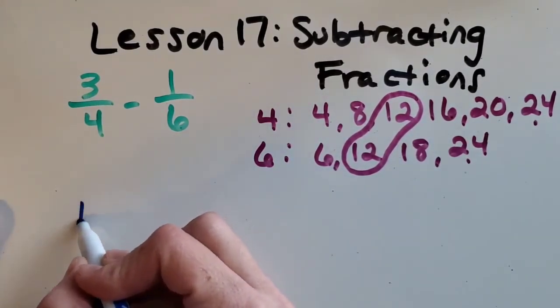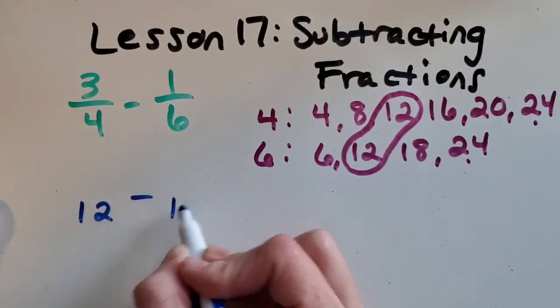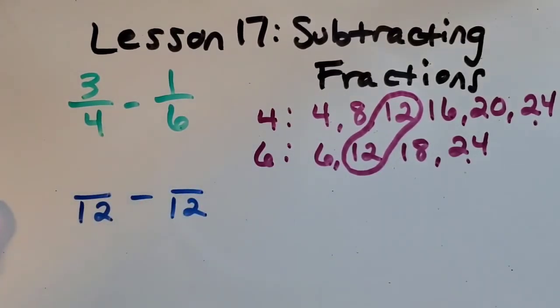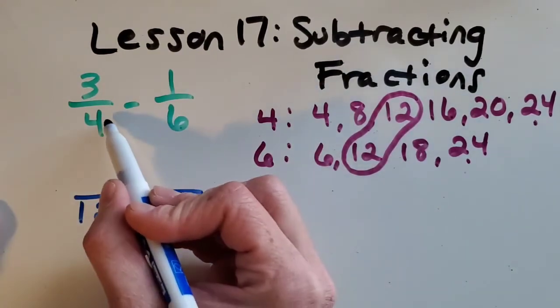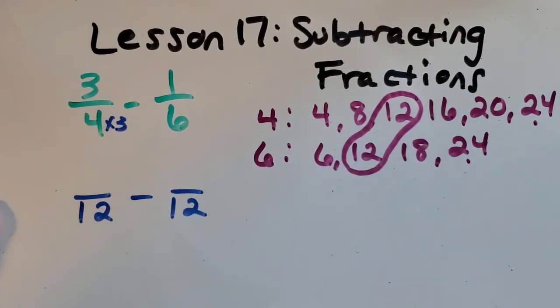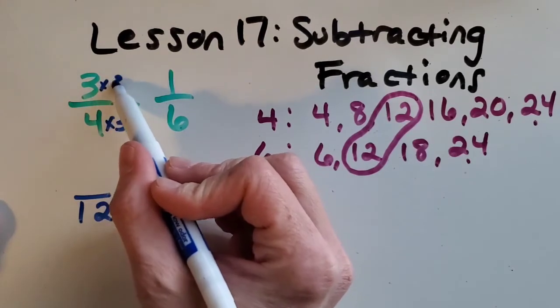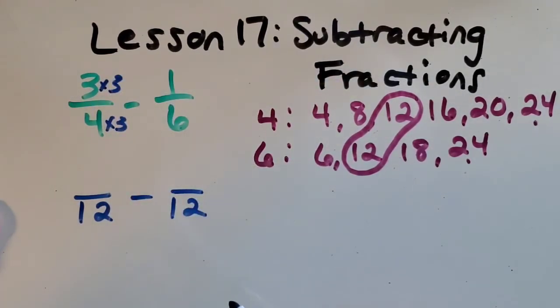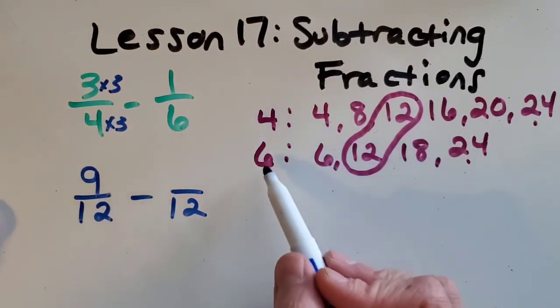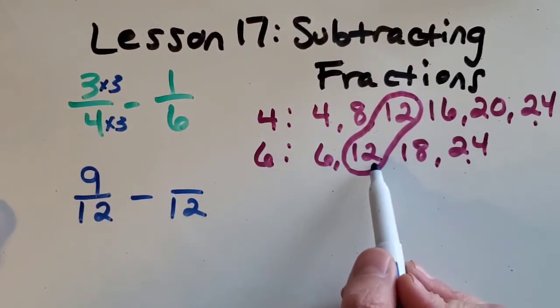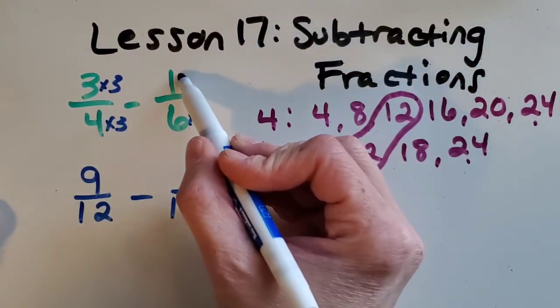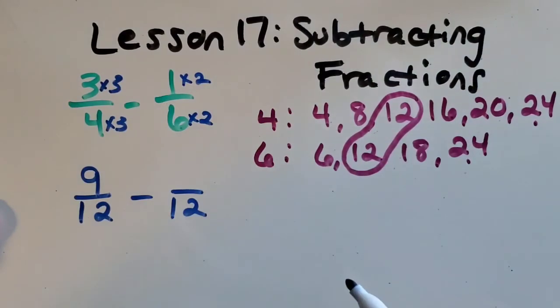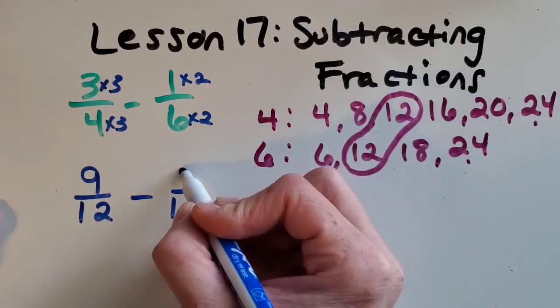Okay now let's build our new problem with our common denominator of 12. Okay so I said earlier 4 times 3. So that's what we're going to do with this fraction. 4 times 3 and 3 times 3. Okay good job, 9. All right now let's do the same thing over here. 6 times what equals 12? Good times 2. So we got to do times 2 to the numerator also and that gives me a 2 there.